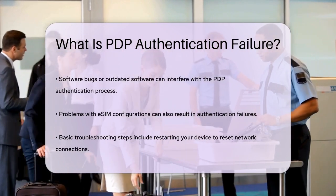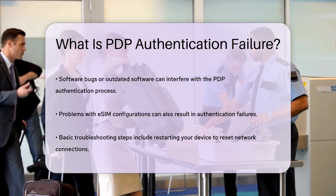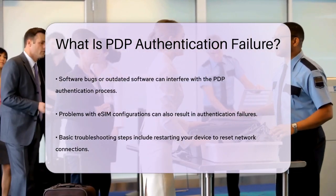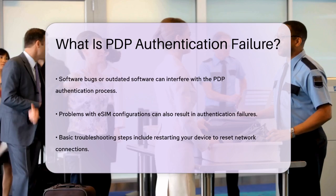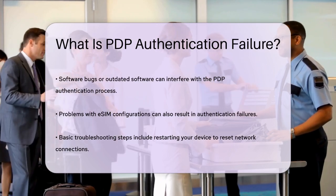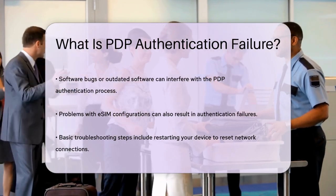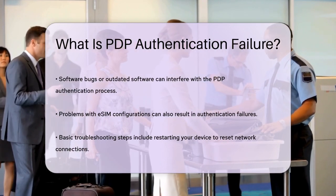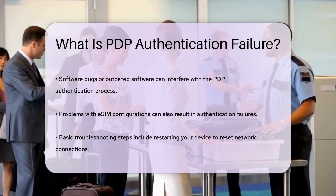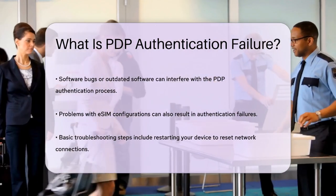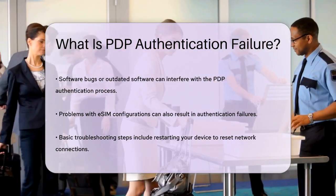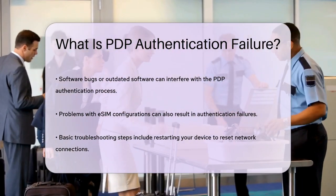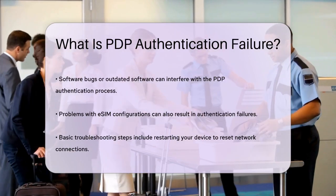Sometimes software bugs can also interfere with the connection process. If your phone's software is not up-to-date or has some underlying issues, it can prevent the PDP authentication from working correctly. In some cases, the issue might be related to your eSIM, which is an electronic SIM card used by some devices. If there's an error or misconfiguration with the eSIM, it can cause the device to fail to authenticate with the network.